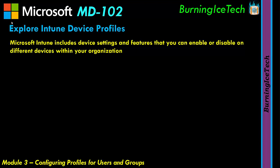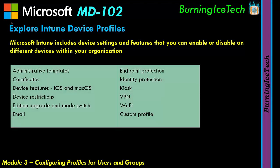There are many things you can enable and disable on these devices. Here's a partial list that Microsoft provides: administrative templates, certificates, device features for iOS and Mac — and you can also configure device features for Android devices. Device restrictions let you control what your people can do on their phones and tablets, including blocking or forcing upgrades to certain editions.